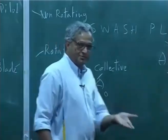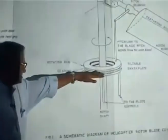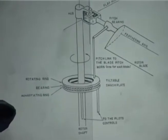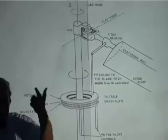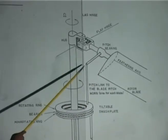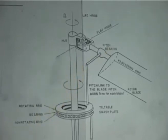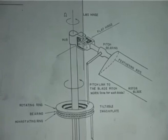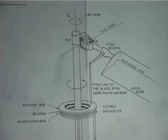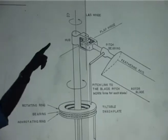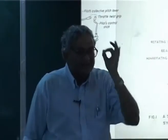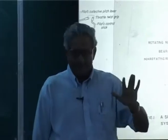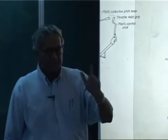Collective pitch input: the pilot moves the stick up, and because this collective lever is up, the swash plate will go up or down. Depending on where this control rod is — in front or back of the blade — pitch angle of all the blades in the rotor system change simultaneously. There is no difference: all the blades will experience the same pitch change.